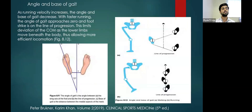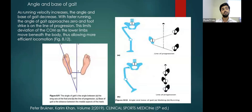Moving forward, we'll see about the angle and base of gait. As running velocity increases, the angle and base of gait will decrease. With faster running, the angle of gait approaches zero. The angle of gait in normal walking is wider, as shown in diagram A. With faster running, the angle of gait approaches zero and the foot strike occurs on the line of progression, as seen in diagram B. The foot striking on the line of progression limits the deviation of the center of mass as the lower limbs move beneath the body, allowing more efficient locomotion.